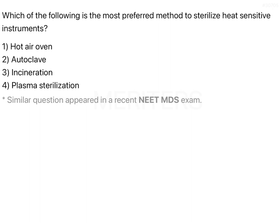If you try to apply common sense: the hot air oven is going to have heat inside, autoclave is again a method of heat sterilization, and incineration is also a method of heat sterilization. So we can reach the correct option by simple exclusion as well — that is plasma sterilization.